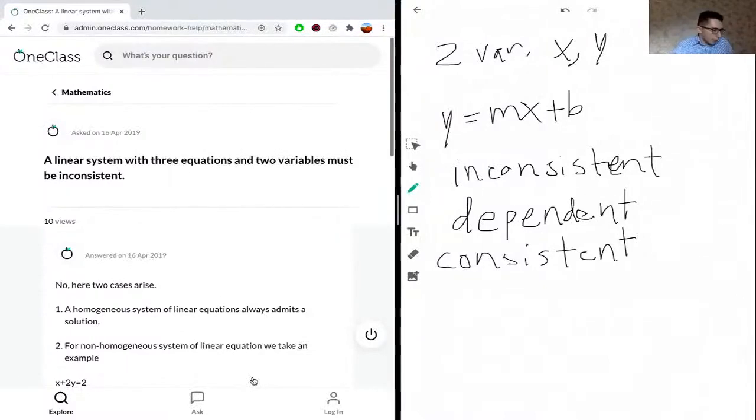The first term, inconsistent, refers to no solutions. If we were to solve the set of equations for the variables, we would get no solutions.